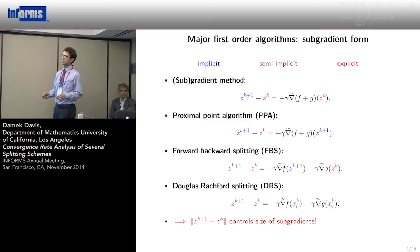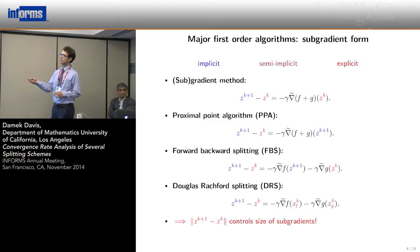What's different about these algorithms? The sub-gradient method is a completely explicit method. It takes a sub-gradient at the start point, z_k. The proximal point algorithm is completely implicit. It takes a sub-gradient at the target point, z_k+1.